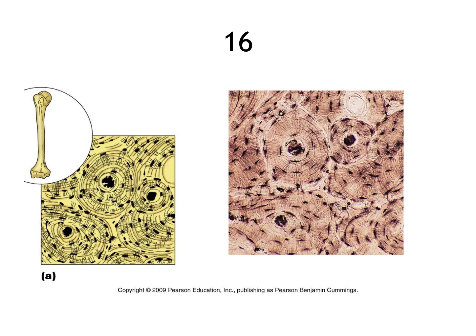This is bone tissue, also called osseous tissue. It has a tree-ring appearance — those rings are called osteons — with a little blood vessel in the middle of each one. It's easy to remember because bone is white and this is the only white tissue you'll probably encounter in introductory anatomy. It has a very distinct look: the tree rings and the white color tell you it's bone.